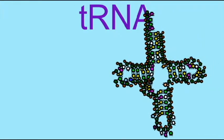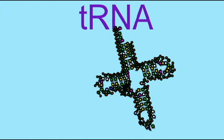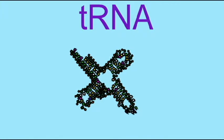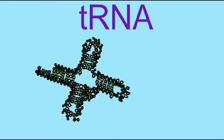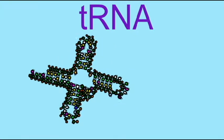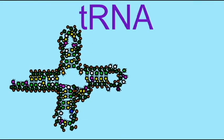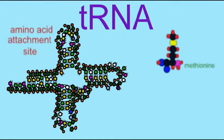tRNA molecules form three important loops. One orients itself on the ribosome. One binds an amino acid. This is extremely important because the mRNA is coding for the specific order of amino acids in a protein, and amino acids must be brought to this mRNA in the order in which they specify. The tRNAs perform this task.